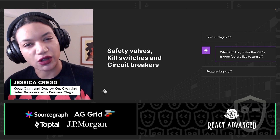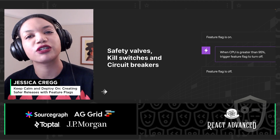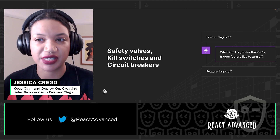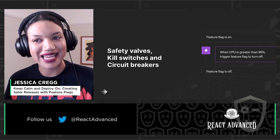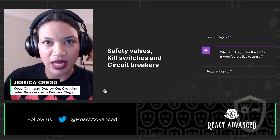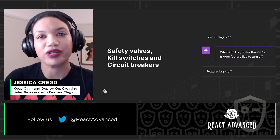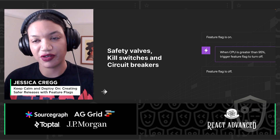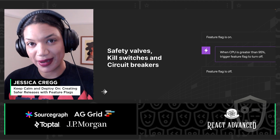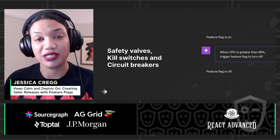A safety valve is a long-term flag that can be used to degrade non-critical functionality of your applications and services. It ultimately helps you maintain availability of all of your applications. It's super common to rely on downstream services and providers, but things start to get scary when you have a single point of failure in your delivery.